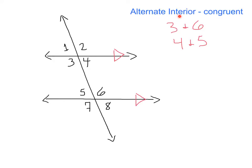Next up, alternate interior angles. Alternate interior angles are always congruent — they have the same measure. Whenever you see the word alternate, think of opposite sides of the transversal. Whenever you see interior, you're thinking of the inside of the two parallel lines. So our alternate interior angles here will be 3 and 6 — they're on opposite sides on the interior. Our other pair of alternate interior angles will be 4 and 5, also on opposite sides on the interior.